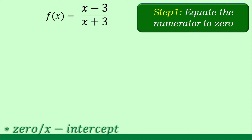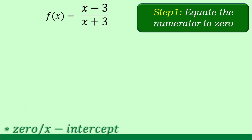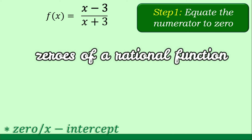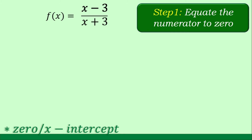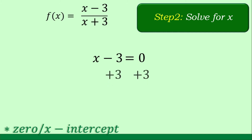Since the zeros or x-intercept of a rational function are values of x that will make the function zero, a rational function will be zero if its numerator is zero. Therefore, the zeros of a rational function are the zeros of the numerator. Step one: equate the numerator to zero. So we take x minus 3 and equate that to zero. Step two: solve for x using the addition property of equality, adding 3 to both sides. This gives us x is equal to positive 3, which is our zero or x-intercept.